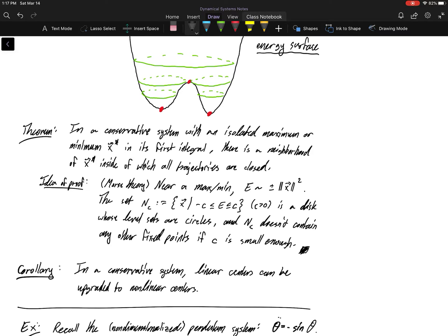If we have a conserved quantity and we look near a max or a min, then those are going to show up as linear centers in linear stability analysis. But because we have a conserved quantity, we can upgrade linear centers to being non-linear centers. So they are in some sense immune to the non-linear effects in conservative systems.